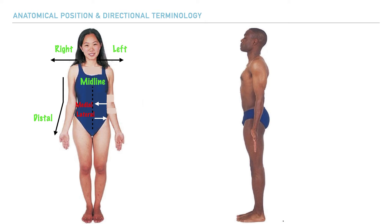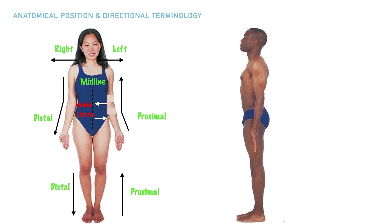For example, we could follow along the arm and move towards the forearm distally, and we could also start at the knee and move downwards in a distal direction. Comparatively, we have the term proximal, which refers to movement that is close to or moving towards the center of the body or a point of origin.